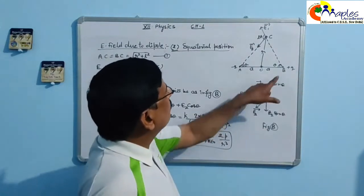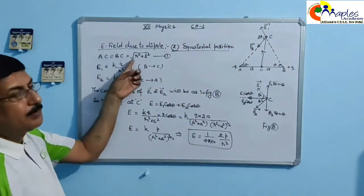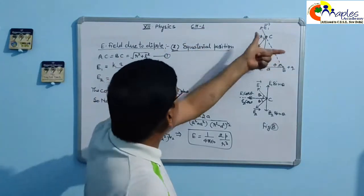So this distance BC and AC both will be equal according to Pythagoras theorem, and equal to root R square plus A square.